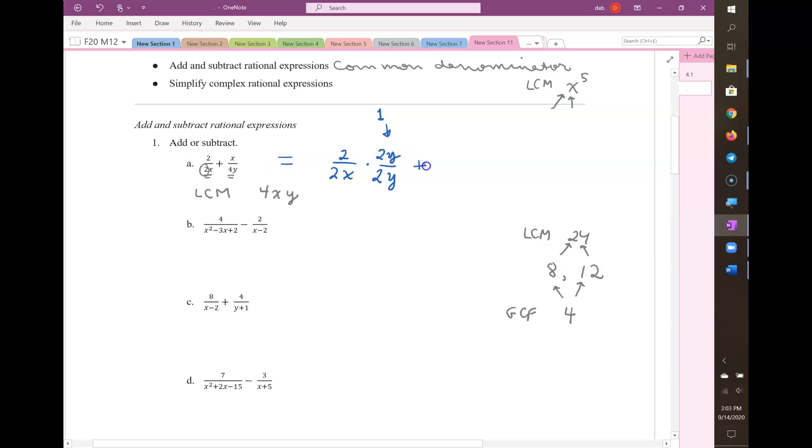Then we have plus, and we have the x over 4y, but our denominator here is missing a factor of an x. So we need to multiply by x over x. Again, that's 1, so it's legal to multiply by 1, because nothing changes.